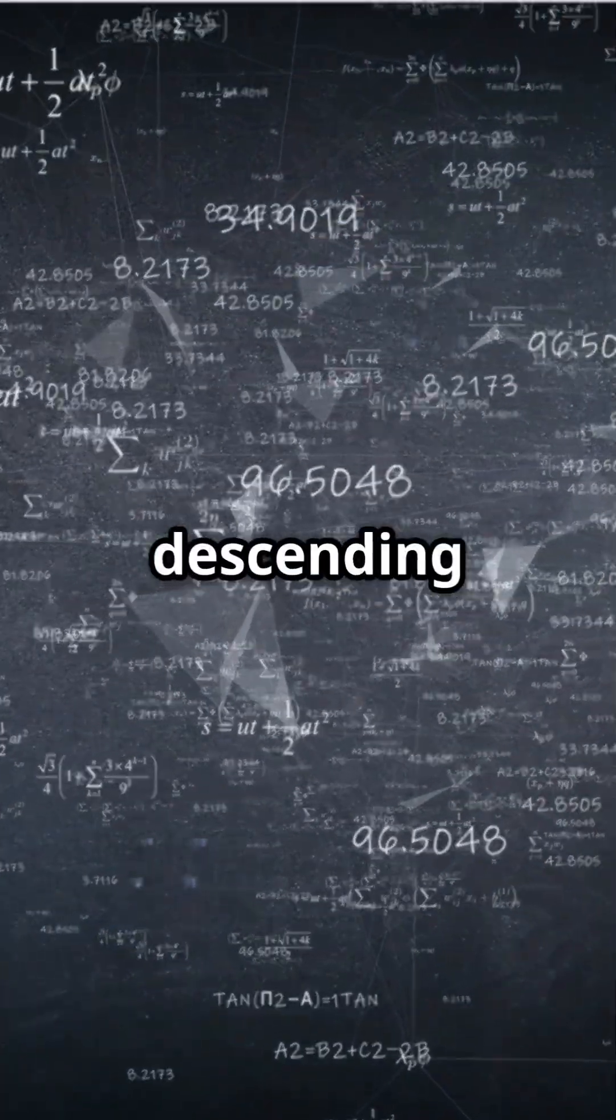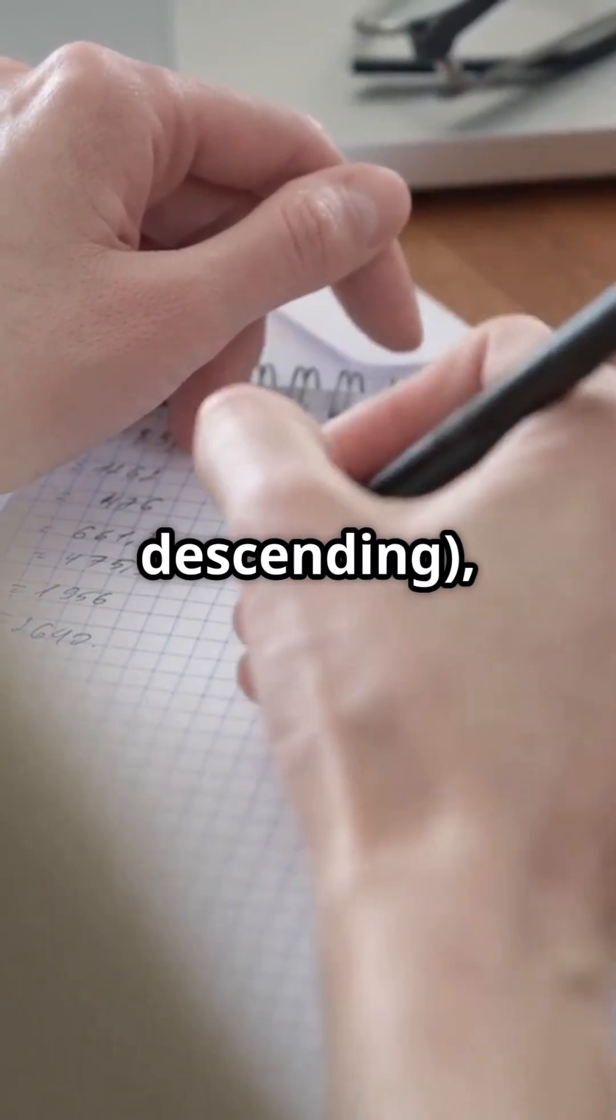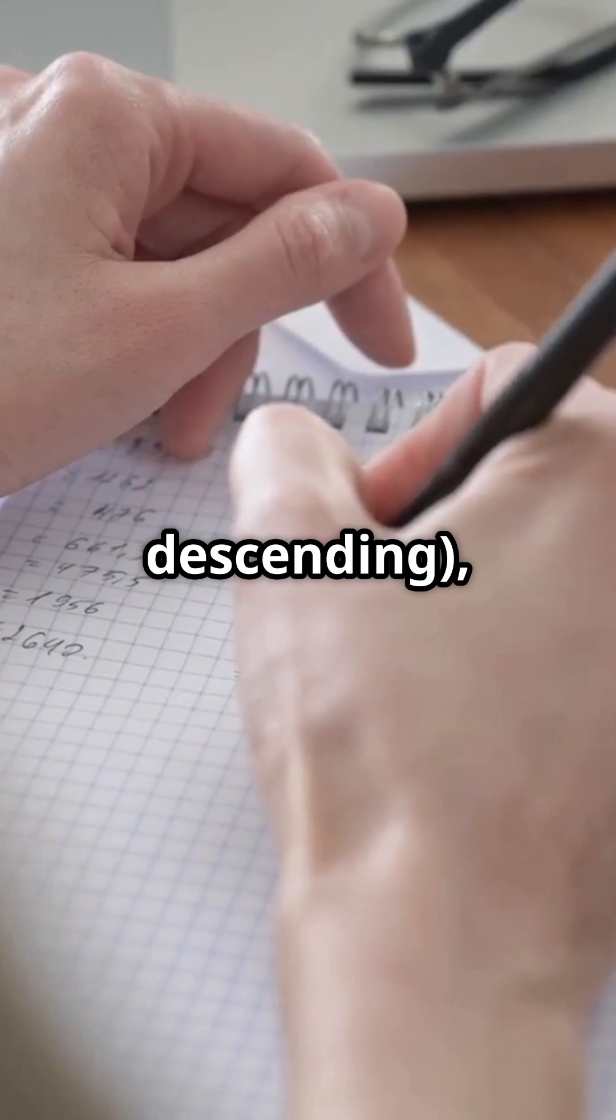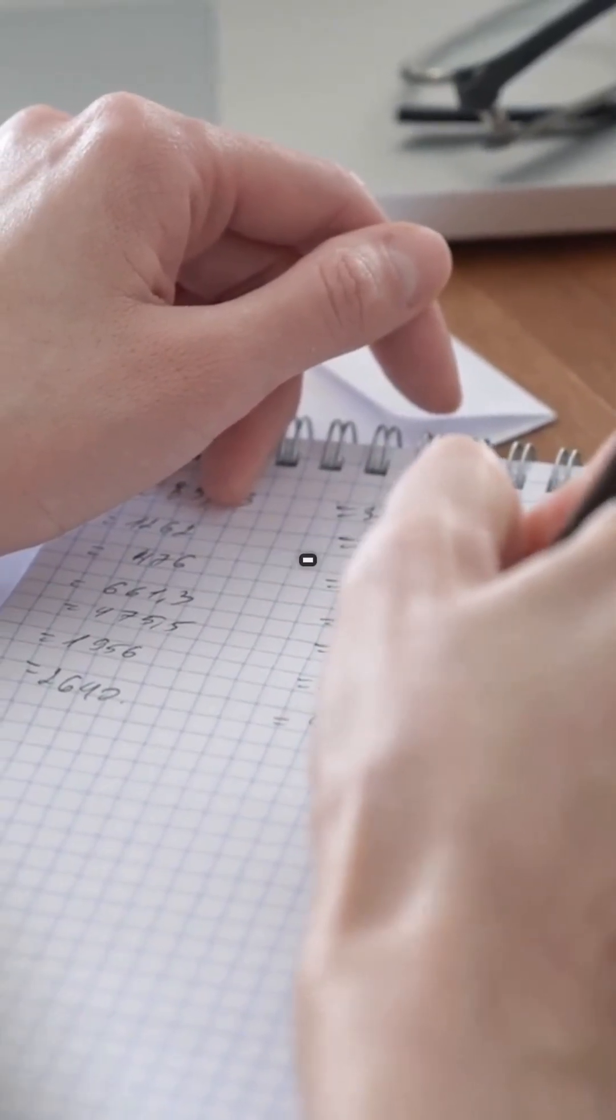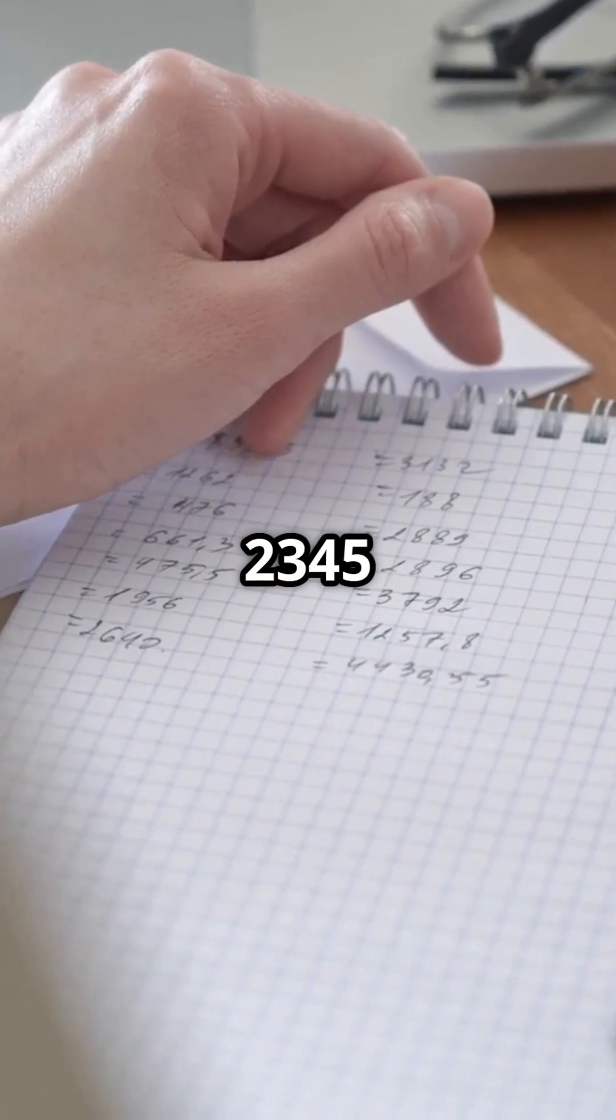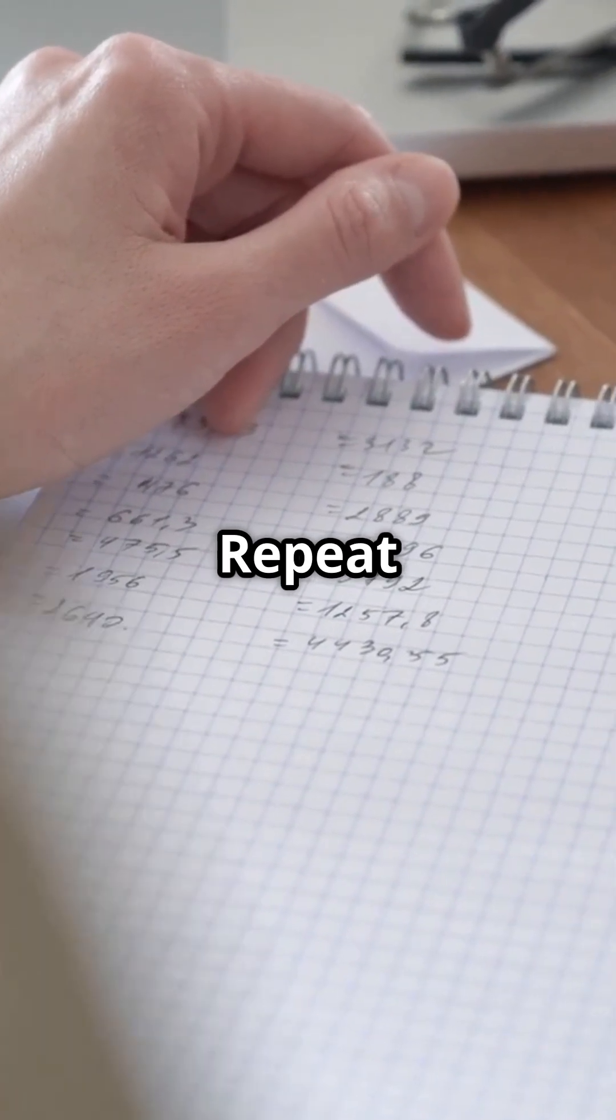Rearrange the digits in descending and ascending order. 5432 descending, 2345 ascending. Subtract 5432 minus 2345 equals 3087.